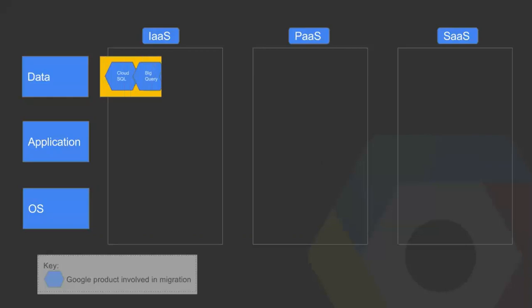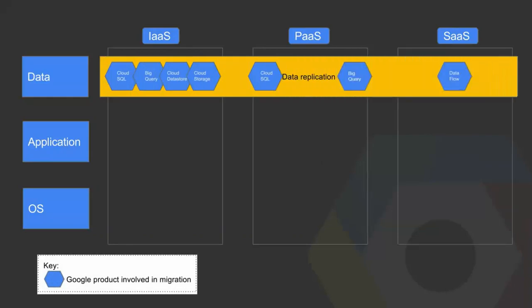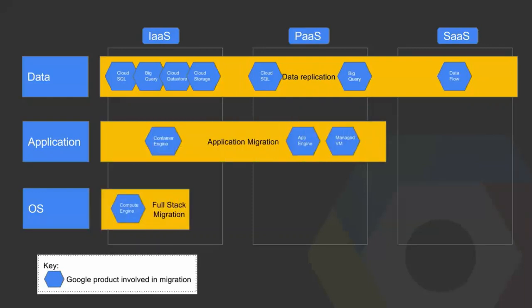Whether one wants to move data into IaaS, PaaS, or SaaS, there are different Google products that can support that migration. Often our customers are interested in moving the entire application stack — the operating system, application, and data — into IaaS. We call that full stack migration into Google Compute Engine.